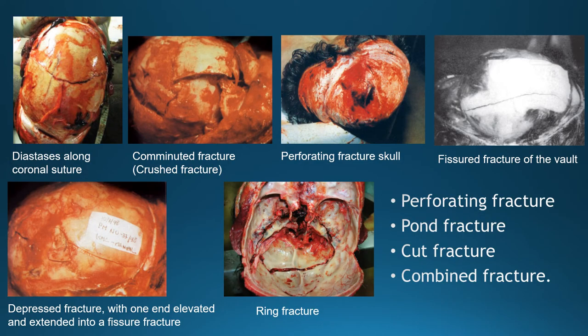Pond fracture (indented fracture) is a simple dent in the skull resulting from obstetric forceps, a blunt object blow, or forcible impact against a protruding object. Due to skull elasticity, it is especially likely in infants; the inner table is usually intact, though fissure fractures may appear around the periphery. Perforating or punctured fracture involves depression fracture of the inner table; a glancing bullet is a common cause.